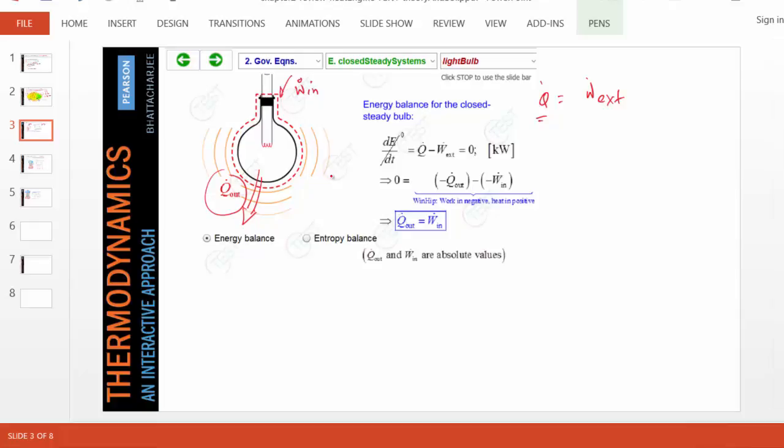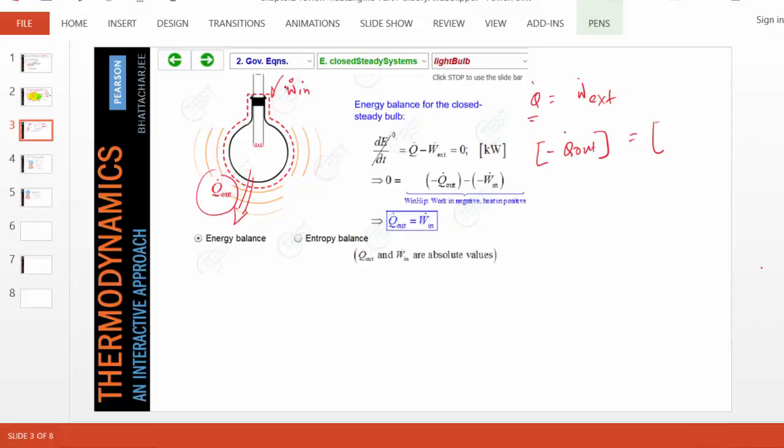Q̇_out is a positive number. Ẇ_external - again, Ẇ_in is a positive quantity because Ẇ_in itself tells you the direction, whereas Ẇ_external you have to put a sign to say which way the work is going. Work in means Ẇ_in is negative.